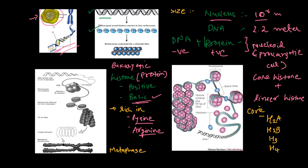The histone proteins are basic in nature and are rich in lysine and arginine — the nature of these amino acids is basic. So the histone proteins are positively charged and can bind with the DNA and wrap around it. You can see in this figure the DNA at 2.2 meters in length wrapped around the histone protein. There are different types of histone proteins: core histones and linker histones.